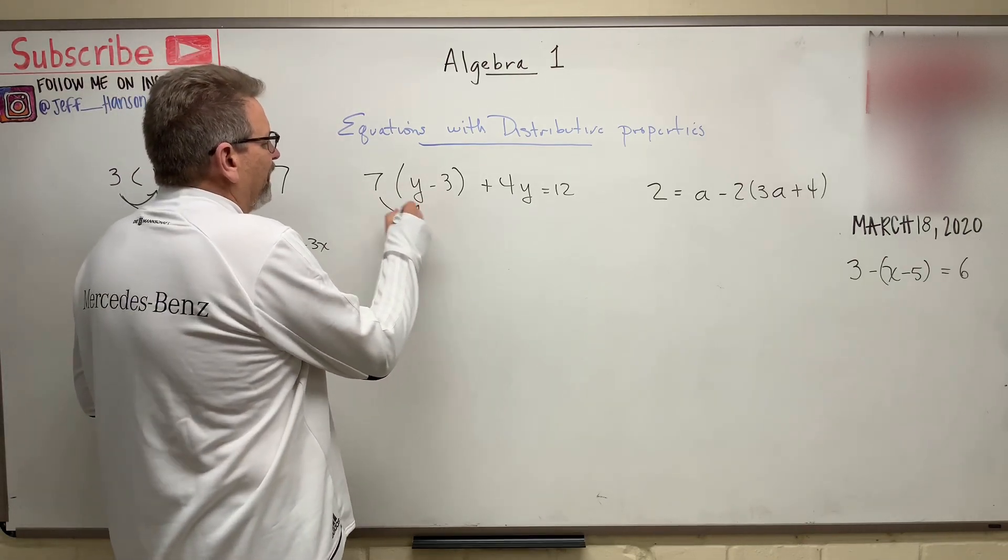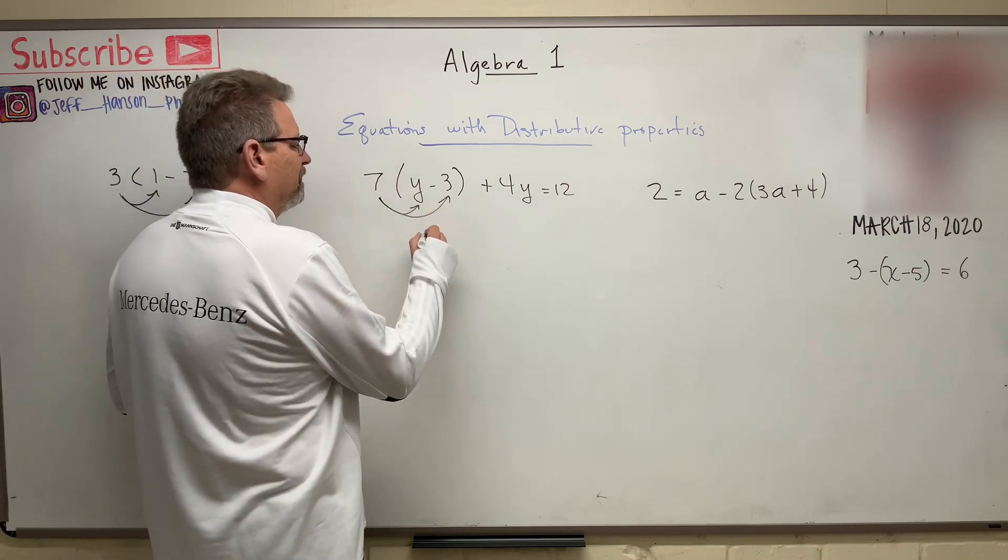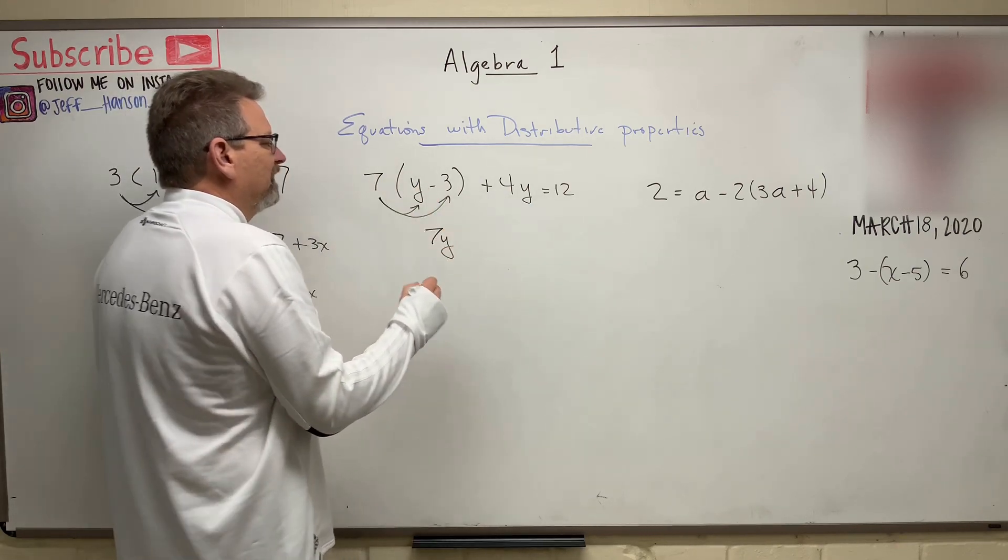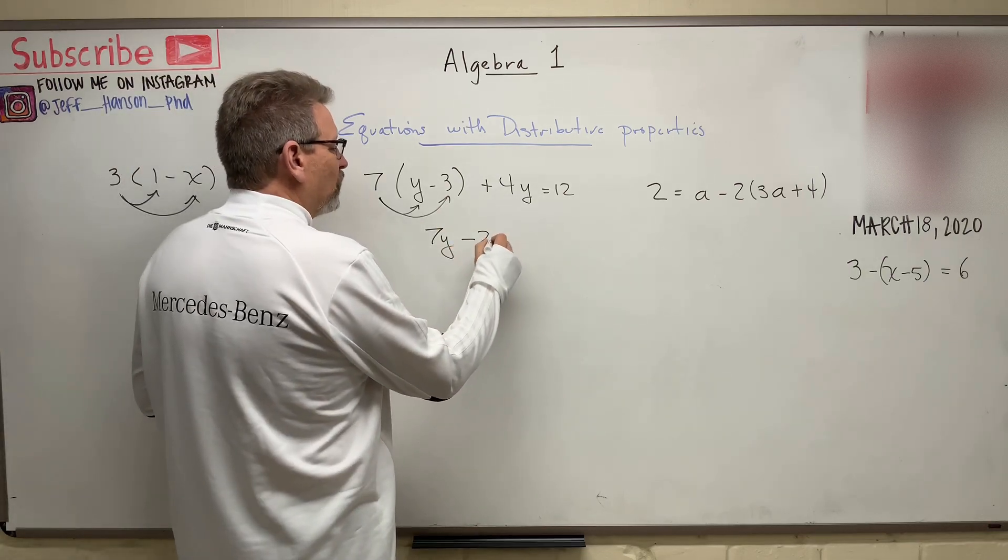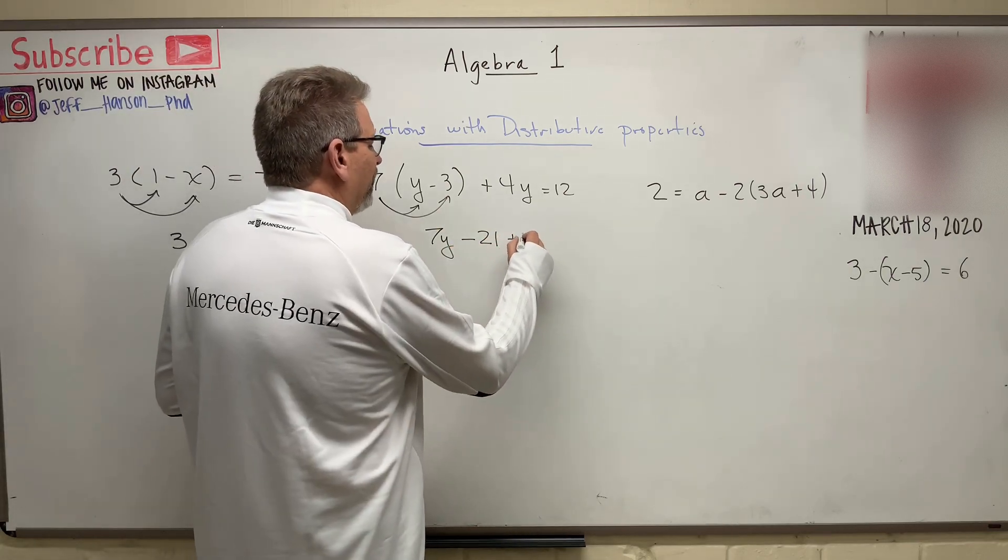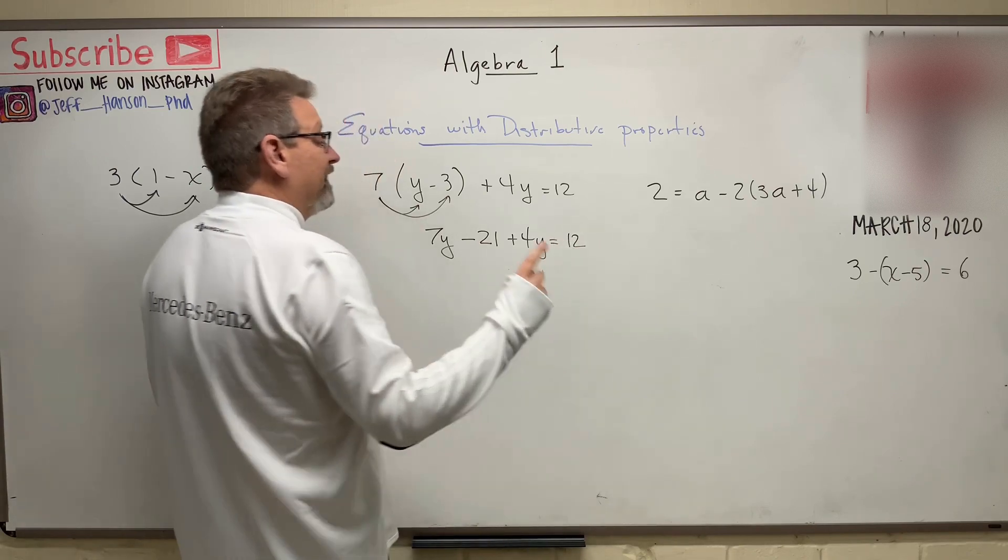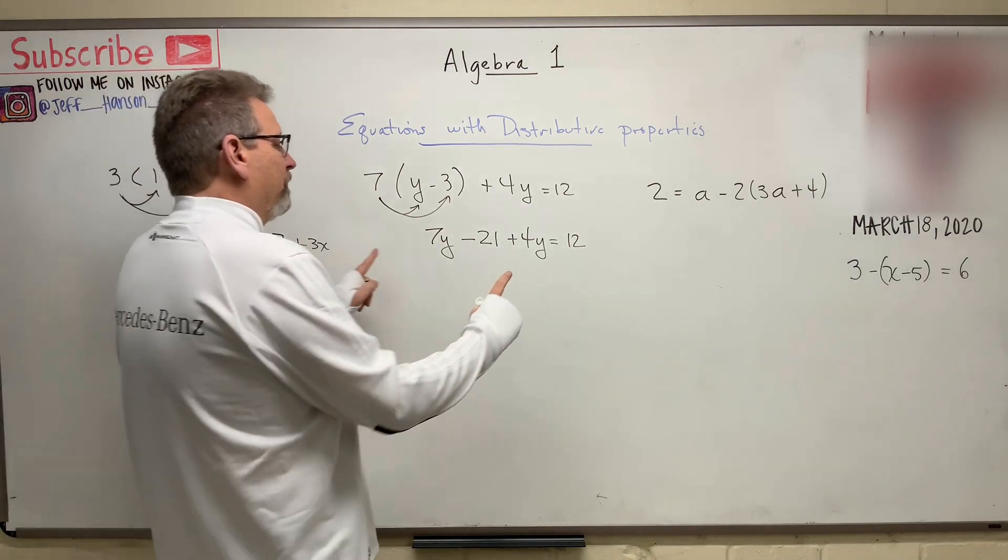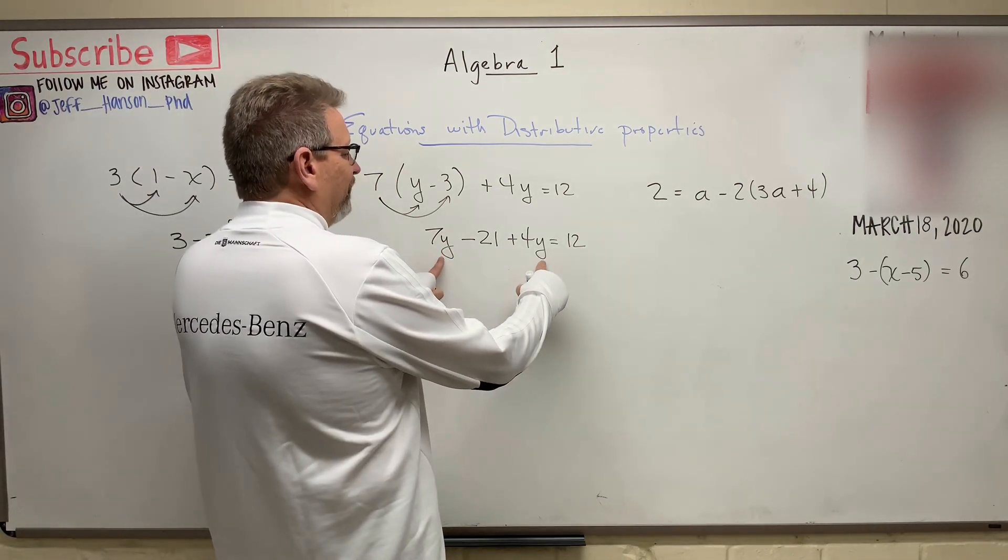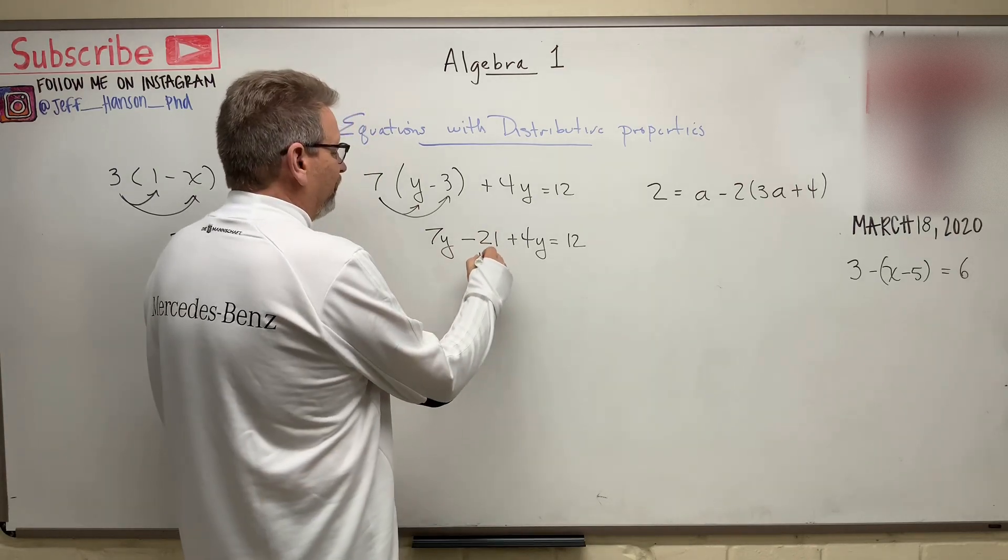Distributive property, there and there. Seven times y, that's just seven y's, and then seven times negative 3 is negative 21, plus another four y's equals 12. Now remember, we just did a video also on grouping. Now we can group things, and I want to group things with y's in them together, and then I'll group whole numbers together. So I'm going to put him on the other side, so let's get rid of that guy.